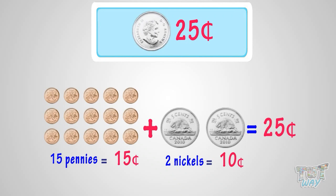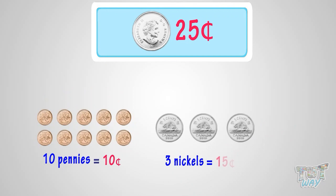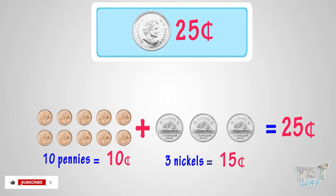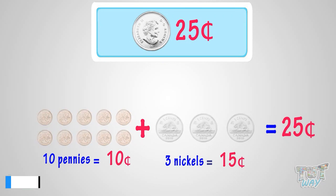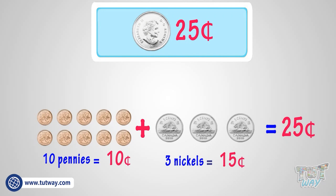Another way can be 10 pennies and 3 nickels. 3 nickels will make 15 cents. So in total we will have 25 cents. So we can exchange this set of coins too for a quarter.